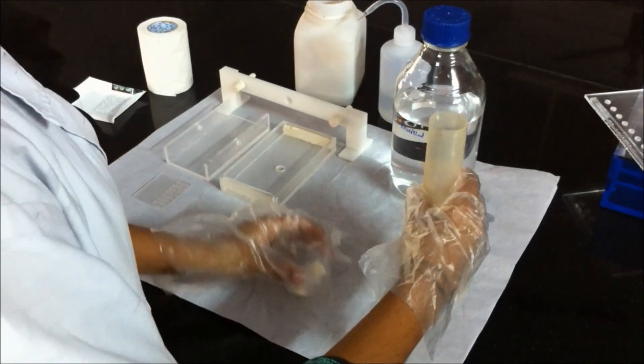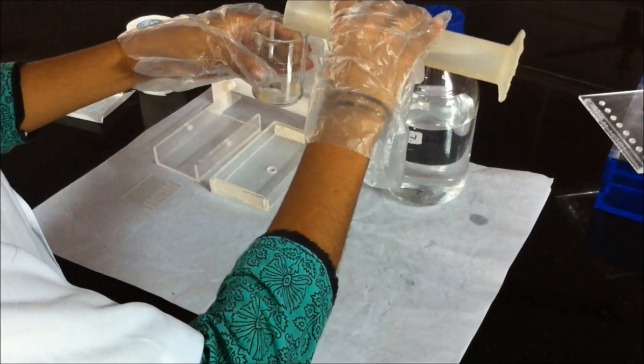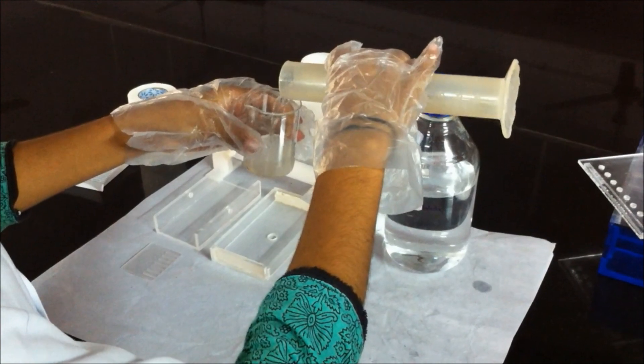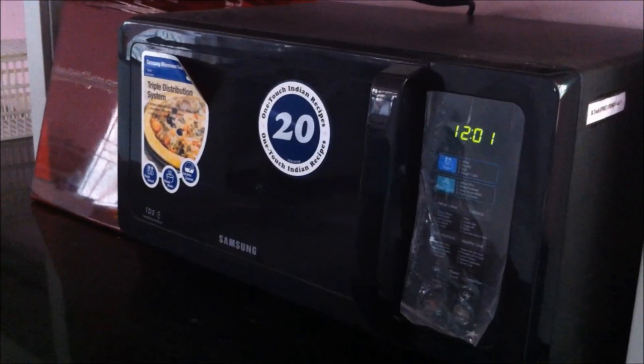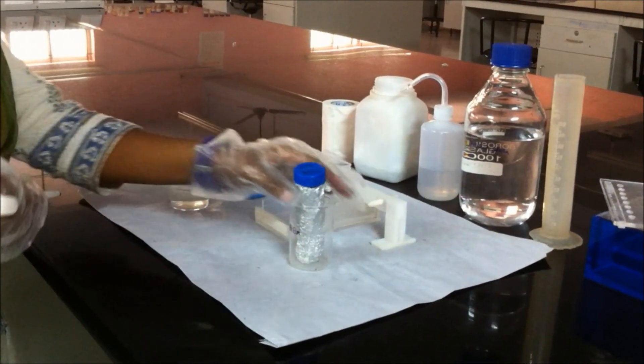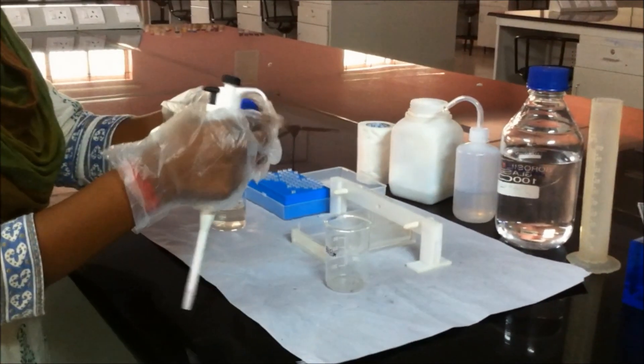Add 1 g of agarose in 100 ml of TBE buffer. Melt it in microwave oven.